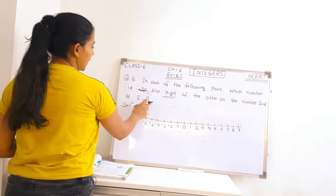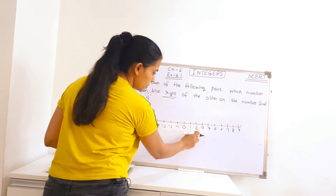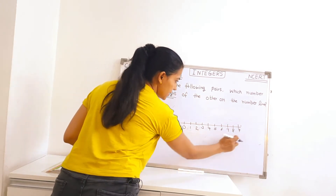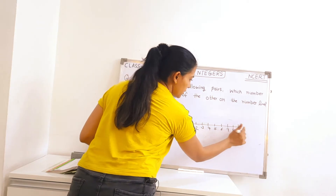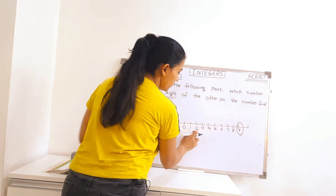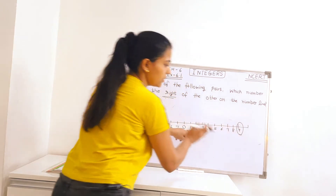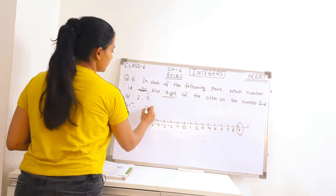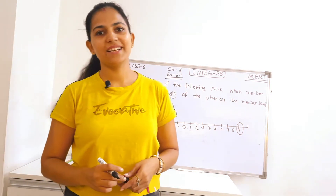So let's check — 2 and 9. Starting from 0, 2 is here and 9 is here. So which number is on the right side of the number line? 9. Between 2 and 9, 9 is on the right side of the number line. So our answer will be 9. So part A is done.